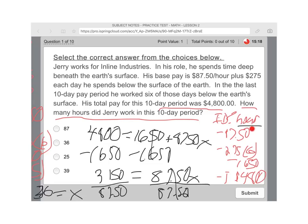We were told some information that his hourly pay is $87.50, but we still don't know how many hours he worked. We were told that he makes $275 a day that he spends beneath the Earth's surface. And we were told that he worked six days below the surface in this pay period. So we found out that was $1,650. And the total of his hourly plus his below-the-ground pay was equal to $4,800.